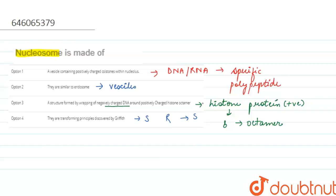Nucleosome is not related to this. From the options now we can make out that our correct answer is option three, that is it is a structure formed by wrapping of negatively charged DNA around positively charged histone octamer. So I hope I was helpful to you all, thank you.